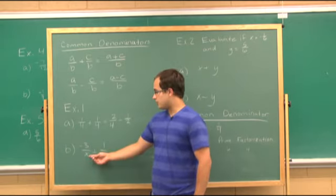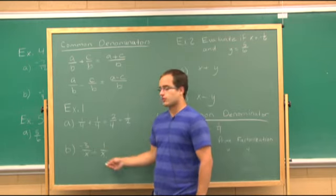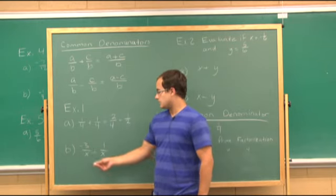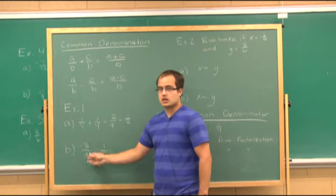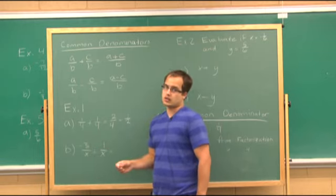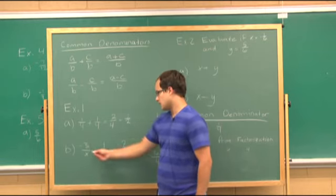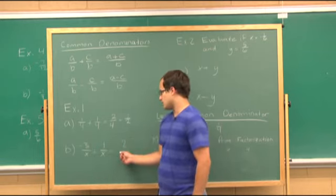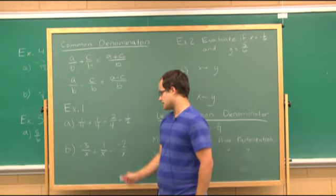Now part b: negative 3x plus 1 over x. They have a common denominator, so negative three plus one is negative two, with the same denominator of x.